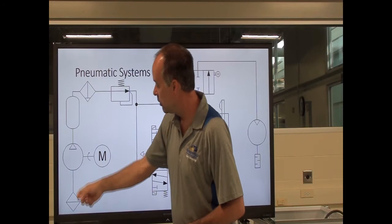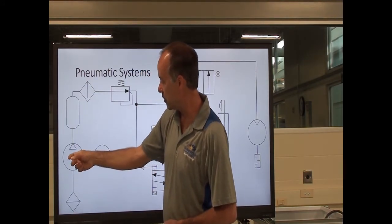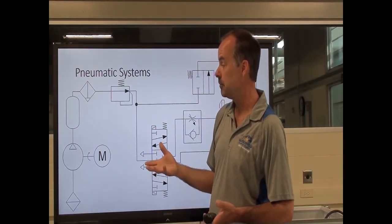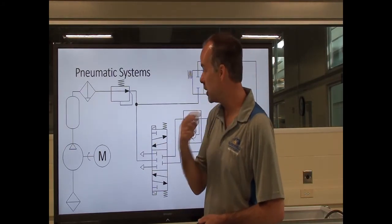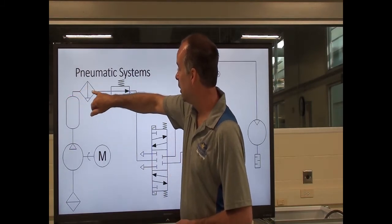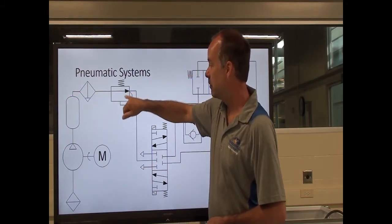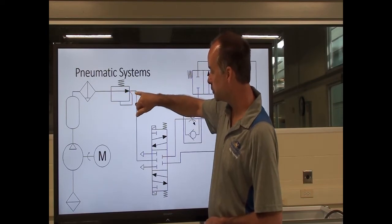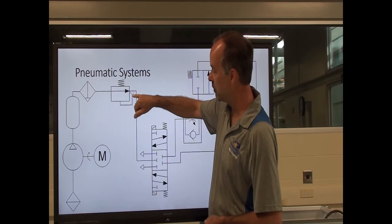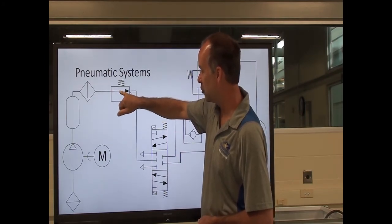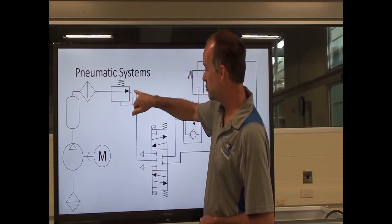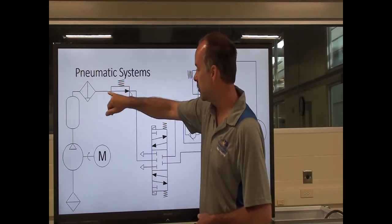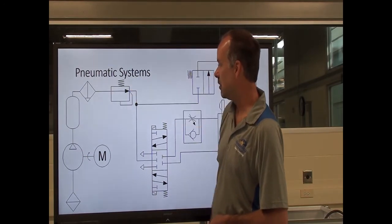Air is drawn in through a filter and compressed. The first thing I come to is a pneumatic receiver, which is a large holding tank. Coming out of my receiver, I go through another filter. Then instead of a relief valve, I go to a pressure reducing valve. I know this is a pressure reducing valve because it's normally open, and my pilot port is on the outlet side of the valve acting on the spool against the spring. When my outlet pressure reaches the set level, this shifts the spool out of the flow path, stopping flow to maintain pressure on the outlet side.